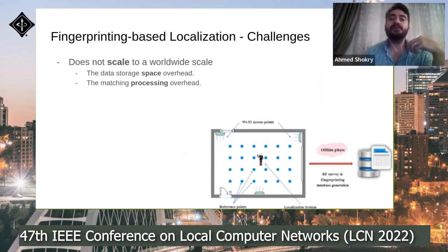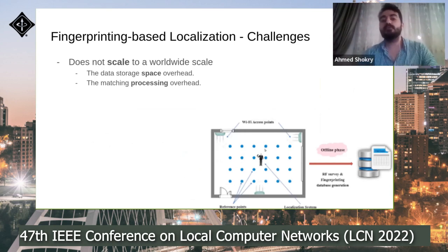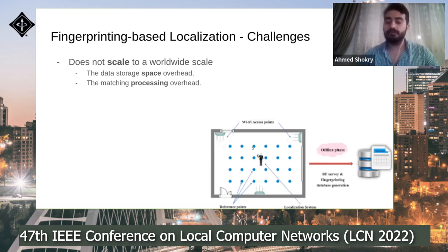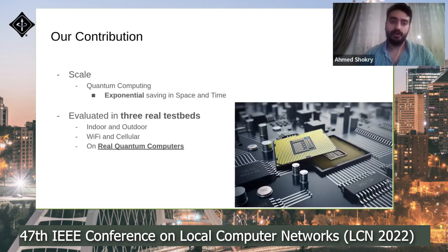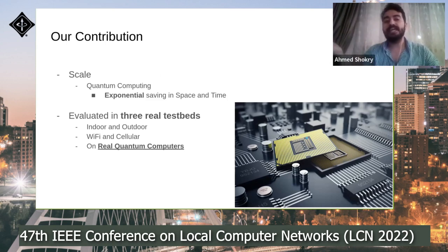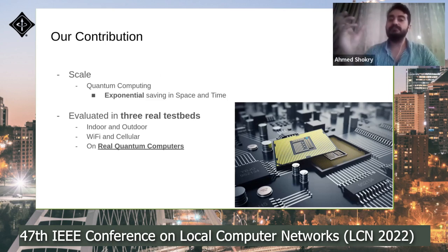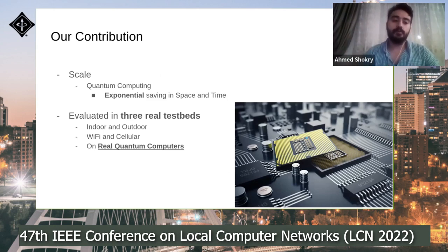The problem in fingerprinting-based localization is that it does not scale to a worldwide scale, due to data storage space overhead — we cannot store huge vectors at each fingerprint location — and also the matching processing overhead. Our contribution is that we enable scaling fingerprinting-based localization to a worldwide scale using quantum computing, which can provide an exponential saving in both space and running time compared to classical fingerprinting-based localization.